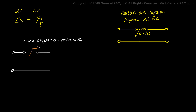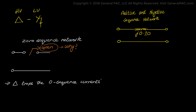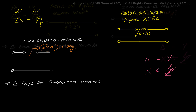Now let's talk about the zero sequence network side of the transformer model for the delta-Y transformer. The delta side is treated as an open circuit. Why is the delta side, or the high voltage side, treated as an open? The intuitive explanation will require another topic altogether, but the basic idea is that the delta winding traps the zero sequence current and does not allow it to flow in either direction of the transformer. Meaning, if there is a high voltage fault, the zero sequence current cannot be reflected on the low voltage side. Or if there is a low voltage fault, the zero sequence current cannot be reflected on the high voltage side.